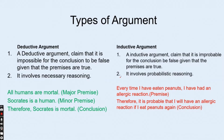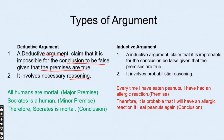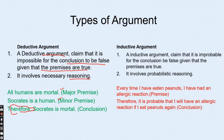The definition of a deductive argument: a deductive argument claims that it is impossible for the conclusion to be false given that the premises are true. It involves necessary reasoning. For example: all human beings are mortal (major premise), Socrates is human (minor premise), therefore Socrates is mortal (conclusion). The word 'therefore' is a conclusion indicator.